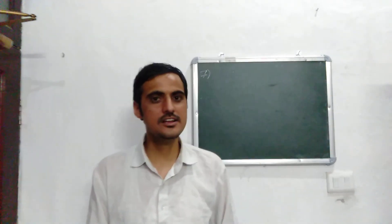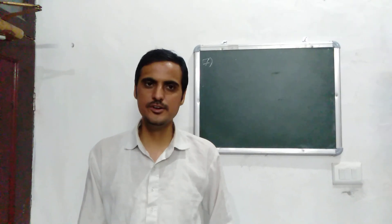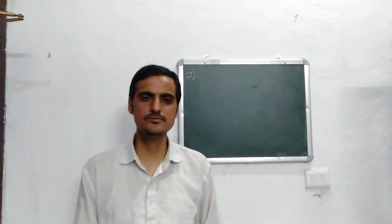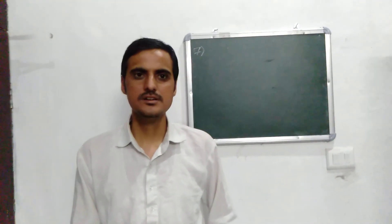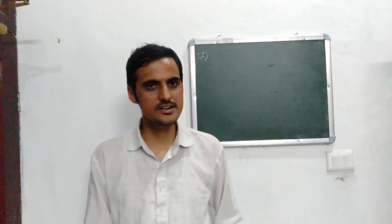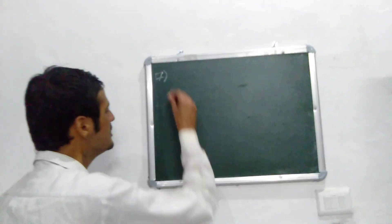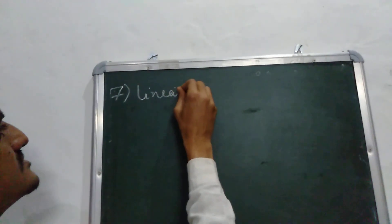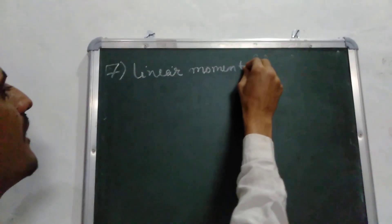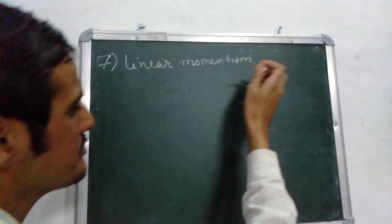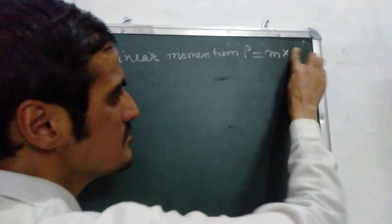Hi there learners, very welcome once again. In the previous video we were discussing about dimensional formulas of some physical quantities — we discussed only six quantities. Now I am starting the next quantity, that is linear momentum. Linear momentum is represented by p. p is equal to mass multiplied by velocity.